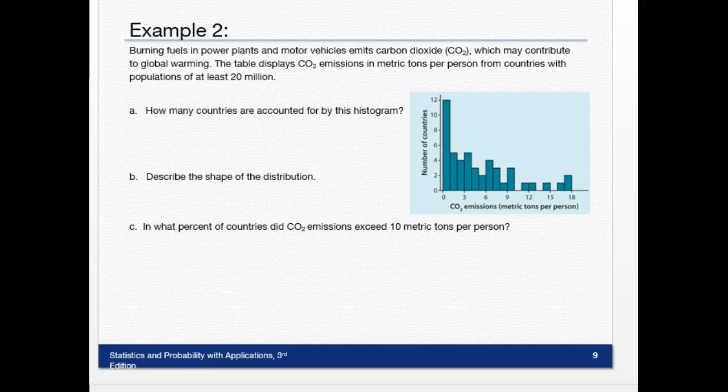So the first question says, how many countries are accounted for by the histogram? Well, how in the world would you know this? Well, you have to look at the bars and kind of estimate which bar is looking at. So this first bar, look, it goes all the way up to 12. So we're going to say this is 12, and then we read them.